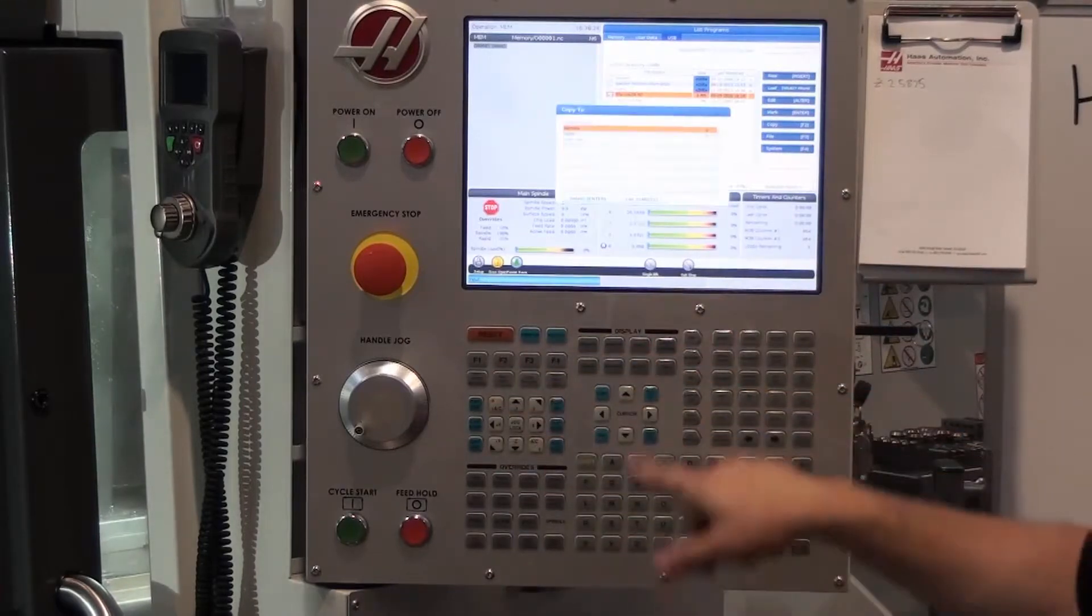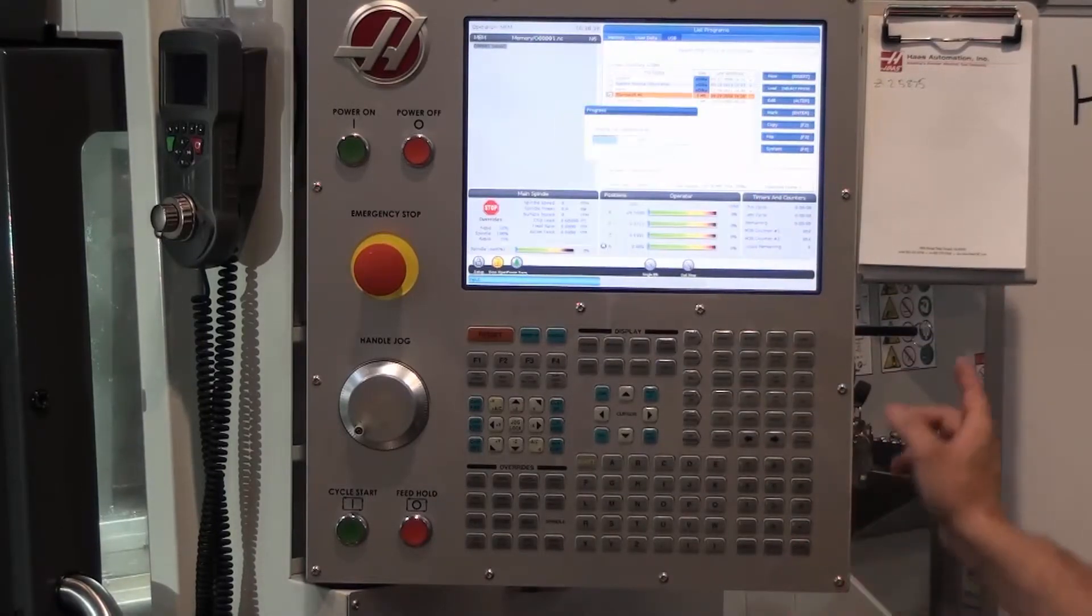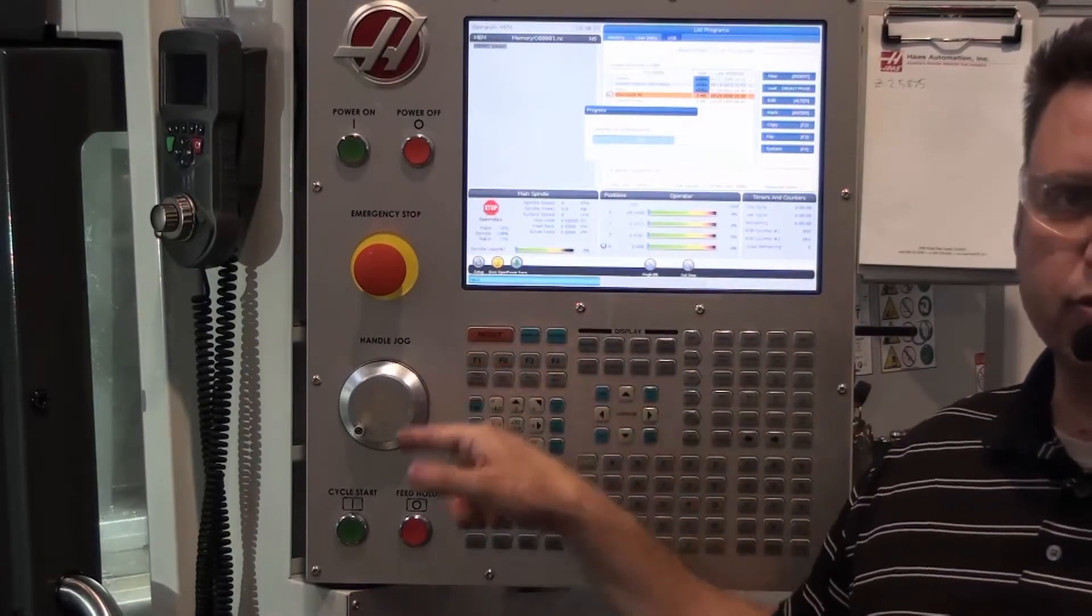It's going to ask us where we want to copy to. In this case, I want to copy to the memory, which is the first choice. I hit enter, I hit enter again. It is now copying from the USB into the memory of the controller.